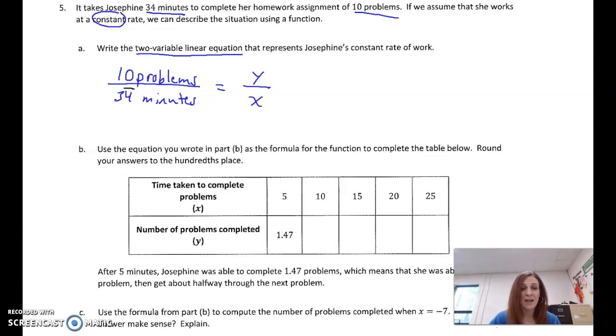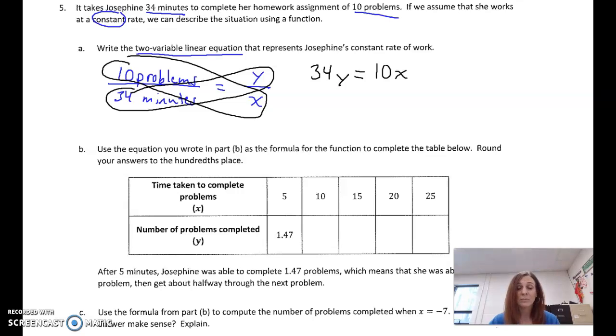And then do our cross-products. And we get 34 times y equals (this is just the cross-products property) 10 times x. So now we solve for y. So remember, I always put the minutes on the bottom, right? It's our independent variable. And if I divide both sides by 34, we've got a couple options here.